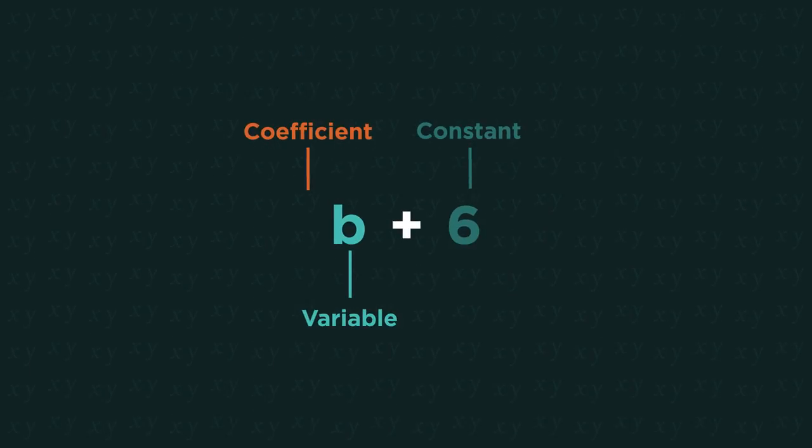If a variable doesn't have a coefficient in front of it, it means the coefficient is one. But we just don't write the one.